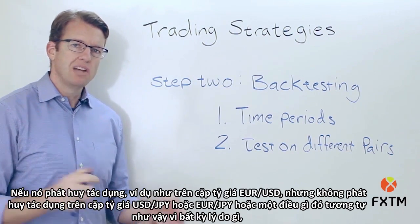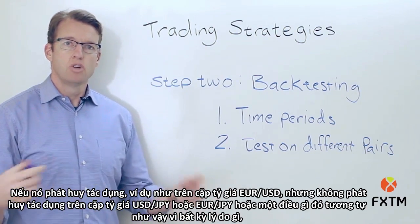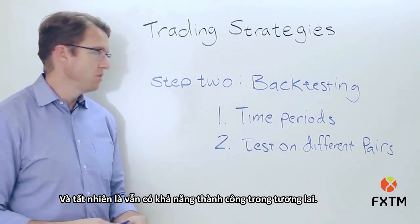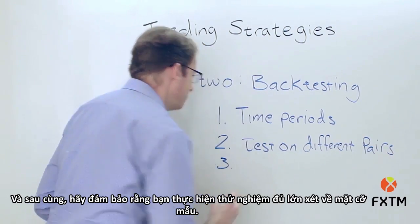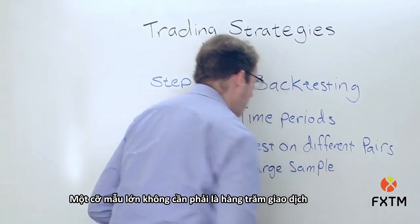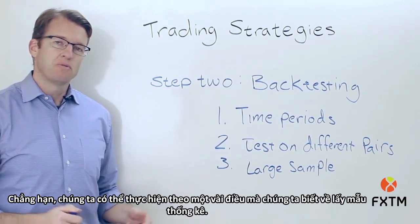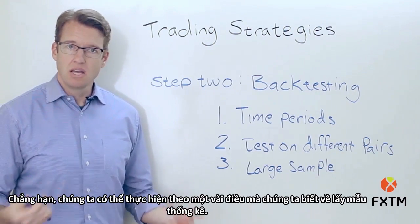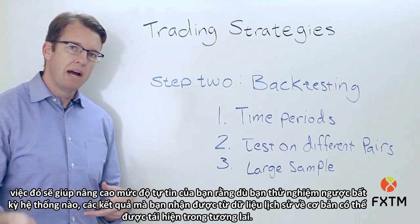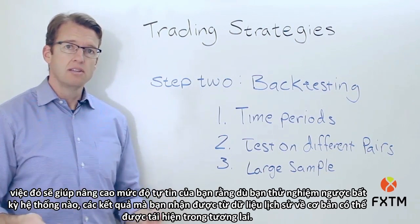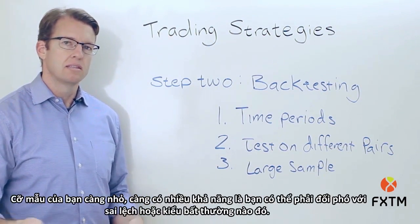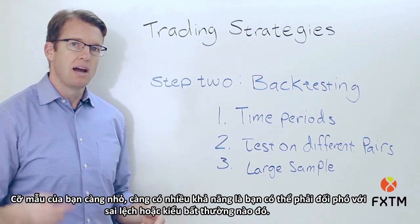If it works on the euro dollar but does not work on the dollar yen or euro yen, that may be telling you something about the validity of your rules and the potential for success in the future. Finally, make sure that you're doing a large enough test in terms of sample size. A large sample size doesn't have to be hundreds of trades, but it should certainly be more than just a couple. Looking at a sample set of at least more than 30 instances is going to help improve your confidence level that whatever system you're backtesting, the results from historical data are likely to be replicated into the future. The larger your sample size, the more confident you can be; the smaller your sample size, the more likely you may be dealing with an outlier or anomaly.